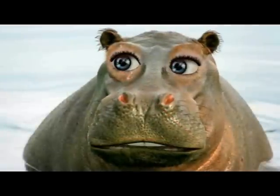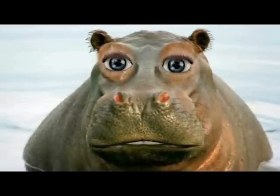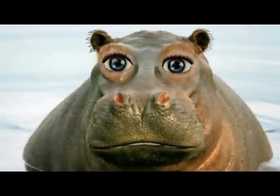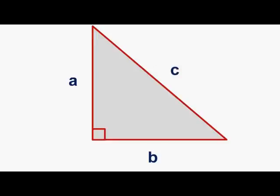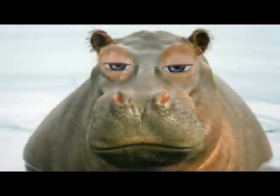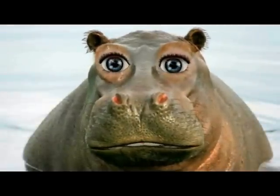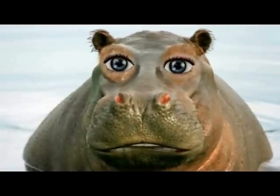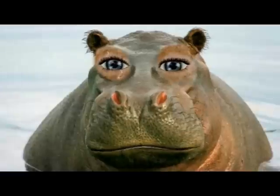Usually a right triangle is marked with the letters A, B, and C, where A and B represent the legs, and C is the hypotenuse. This helps us write the Pythagorean Theorem. Hopefully Spro comes back and tells you about it. Math teachers!